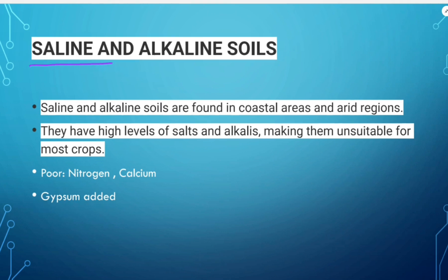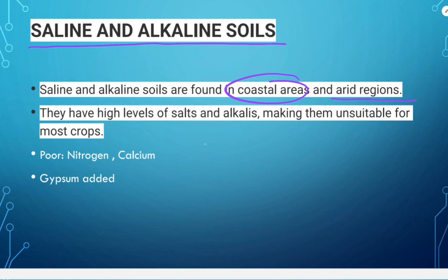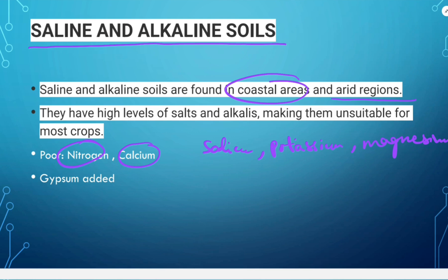Saline and alkaline soils are found in coastal areas and arid regions. The soil contains large portions of sodium, potassium and magnesium, which is why they are infertile and do not support vegetative growth. These soils contain more salts largely because of dry climate and poor drainage, and lack nitrogen and calcium. In areas like Punjab and Haryana, farmers are advised to add gypsum to solve the problem of salinity in the soil.